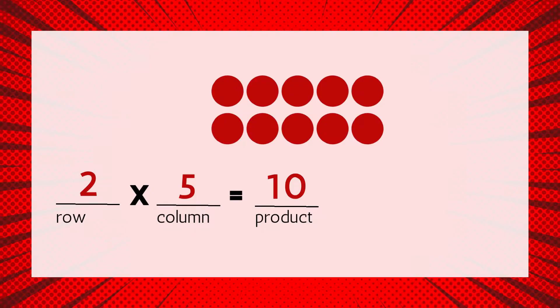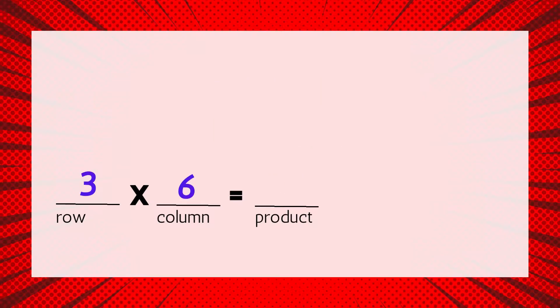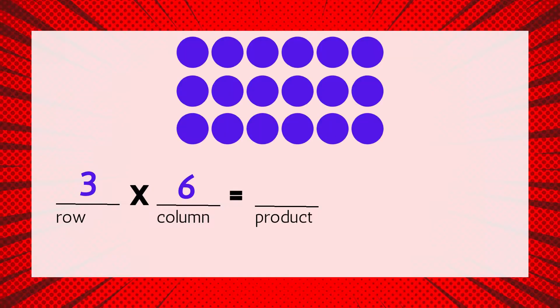Let's try another example. We want to solve the equation 3 times 6 equals something. We know the first factor is 3 — that's the number of rows. The second factor is 6 — that's the number of columns. Now we can draw an array to solve. Our array has 3 rows with 6 in each row.